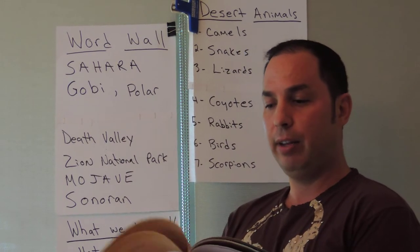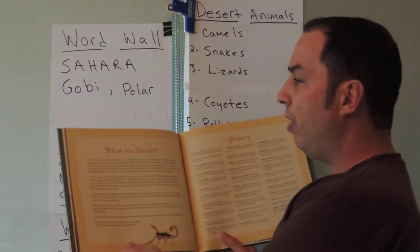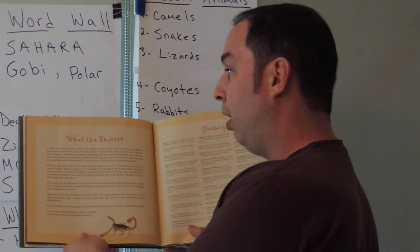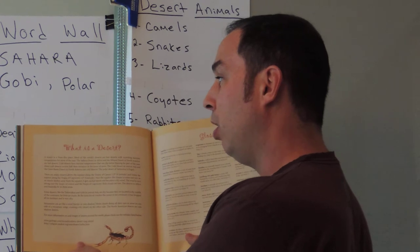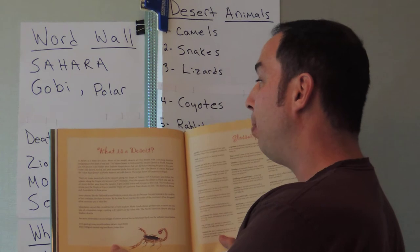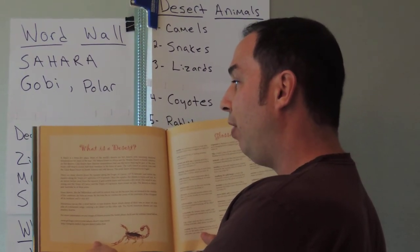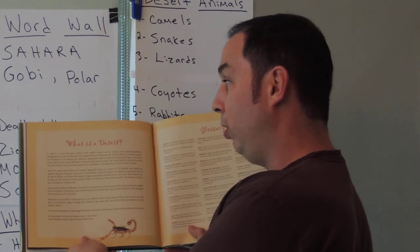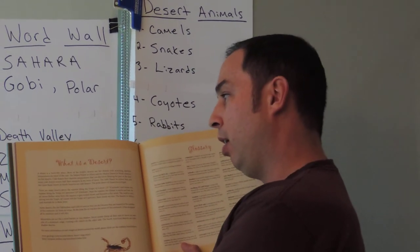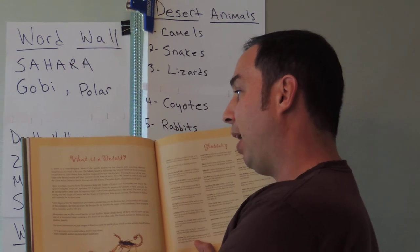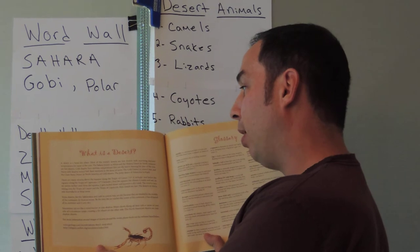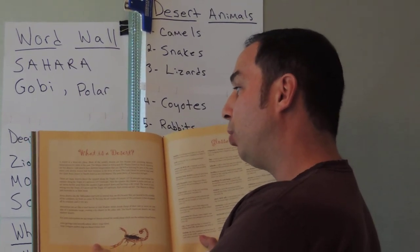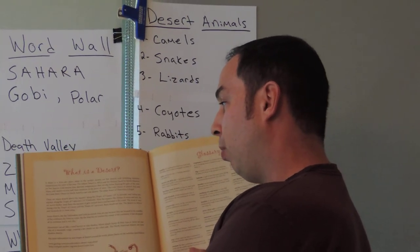The last thing I want to go over is the definition: what is a desert? A desert is a bone-dry place. Most of the world's deserts are hot deserts with scorching daytime temperatures for most of the year — the Sahara Desert in Africa and the Mojave Desert in North America are hot deserts. Cold deserts have daytime temperatures that can dip below freezing; many receive half their moisture as snow — the Gobi Desert in central Asia and the Great Basin Desert in North America are cold deserts. The polar desert of Antarctica is frigid. There are many desert areas above the equator along the Tropic of Cancer and below the equator along the Tropic of Capricorn.